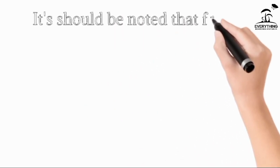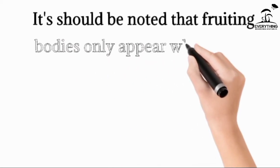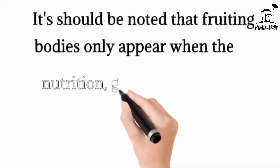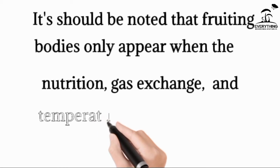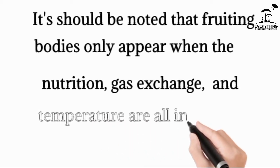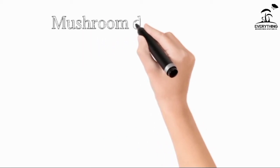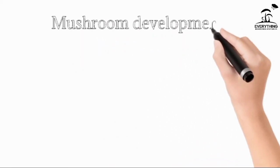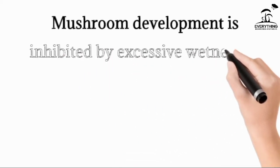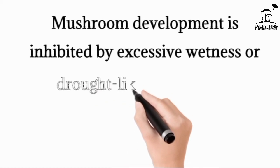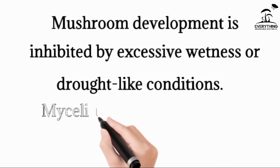It should be noted that fruiting bodies only appear when nutrition, gaseous exchange, temperature, and environmental conditions are all favorable — then the mushroom starts to grow. When there is excessive moisture or drought, like low humidity content, then mycelium doesn't grow and therefore we don't have mushrooms. So before you can grow your mushroom, you have to have good weather conditions and your moisture content shouldn't be excessive.